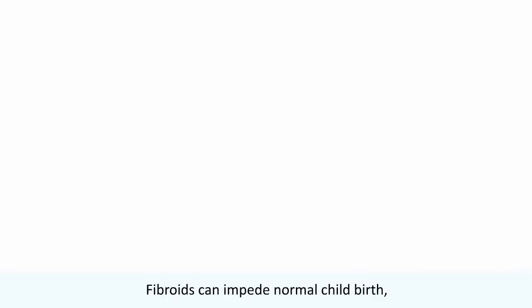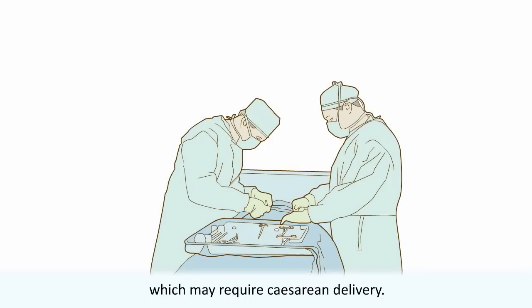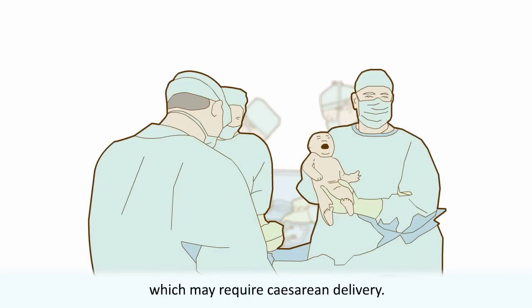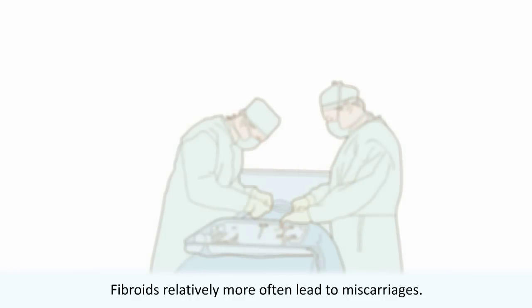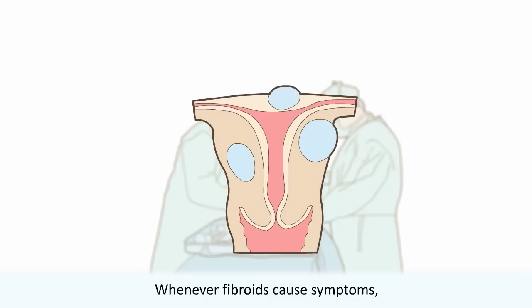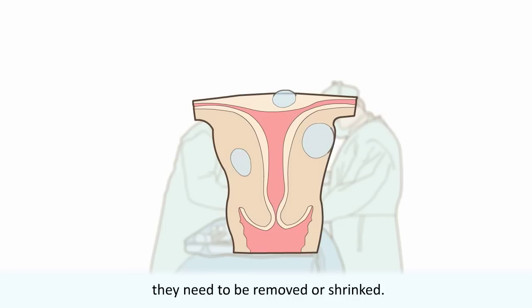Fibroids can impede normal childbirth, which may require caesarean delivery. Fibroids relatively more often lead to miscarriages. Whenever fibroids cause symptoms, they need to be removed or shrunk.